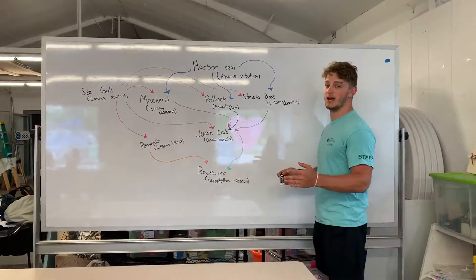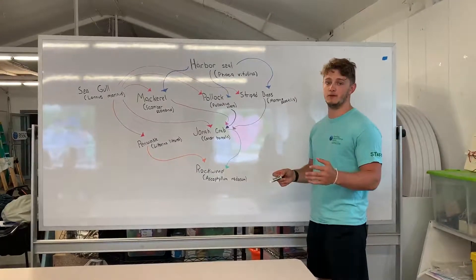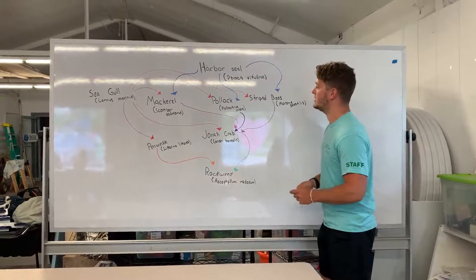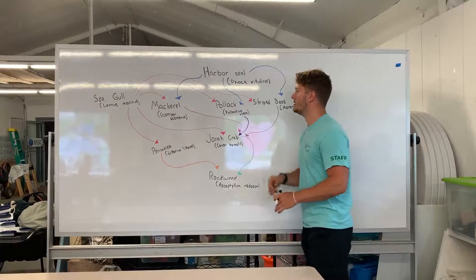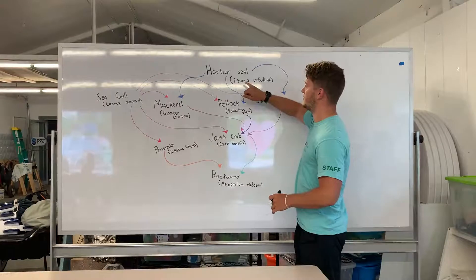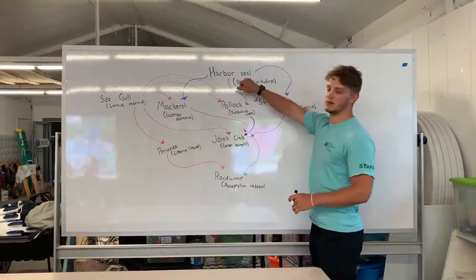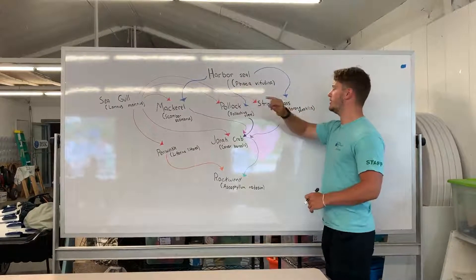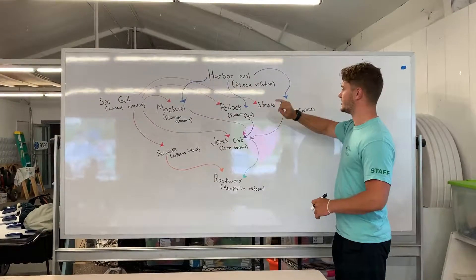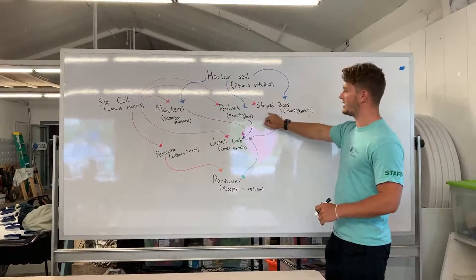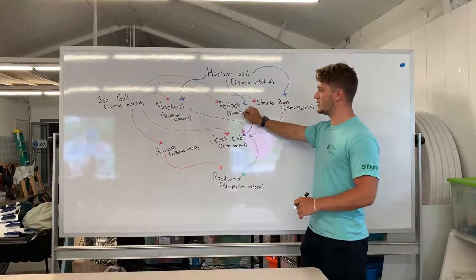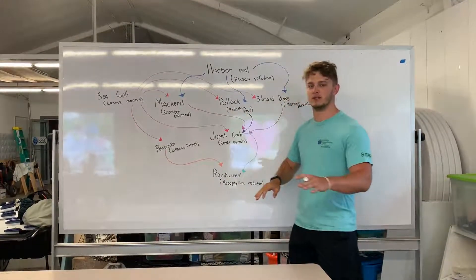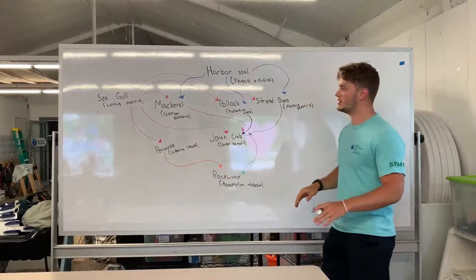Let's look at the food web down here in Boothbay. To start off with, we've got the harbor seal. The harbor seal will eat stuff like the striped bass, pollock, and mackerel, which are all different types of fish.